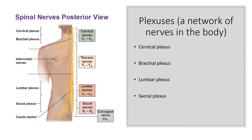There are also several plexuses, which are networks of nerves in your body. There's the cervical plexus and the brachial plexus, spanning from cervical nerves C1 through C8. There's also the lumbar plexus, which is a bundle of lumbar nerves L1 through L5, and the sacral plexus, which bundles some lumbar nerves and sacral nerves S1 through S5.